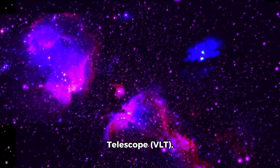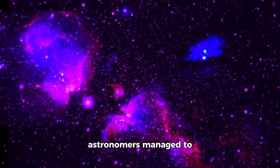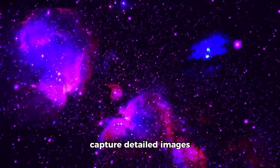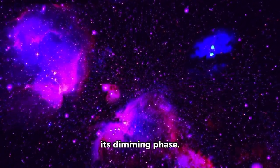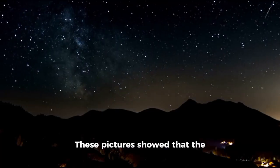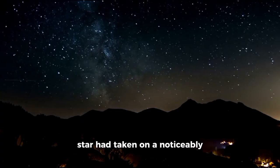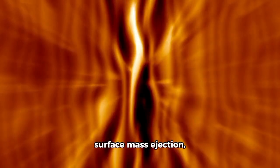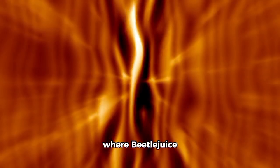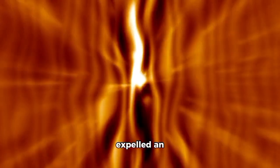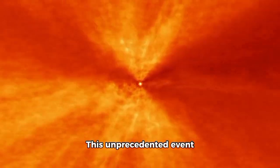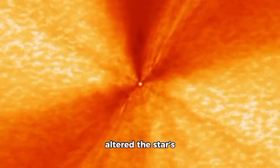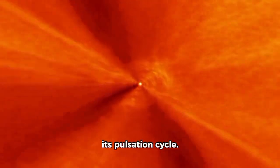Using Chile's Very Large Telescope VLT, astronomers managed to capture detailed images of Betelgeuse during its dimming phase. These pictures showed that the star had taken on a noticeably lopsided appearance. Further analysis suggested that this dimming was likely caused by a massive surface mass ejection, where Betelgeuse expelled an extraordinary amount of material into space. This unprecedented event altered the star's appearance and disrupted its pulsation cycle.